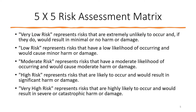Looking at how risk levels break down: very low risk means minimal or no harm at all. Low risk means a low chance of occurrence with minor consequences. Moderate risk means moderate likelihood along with moderate harm. High risk means it's likely to occur with significant harm. And very high risk means it's highly likely to happen, with severe or catastrophic harm or damage as the result.